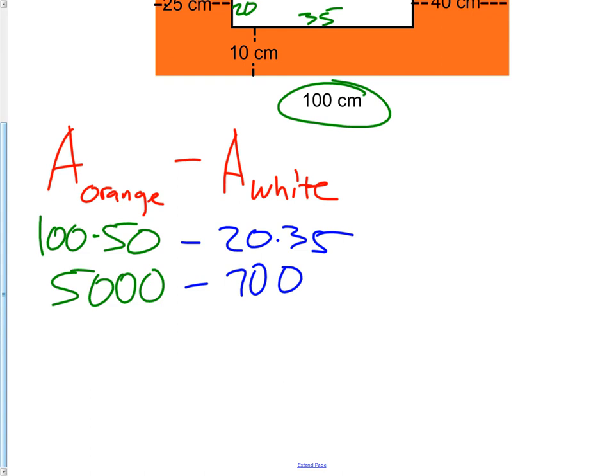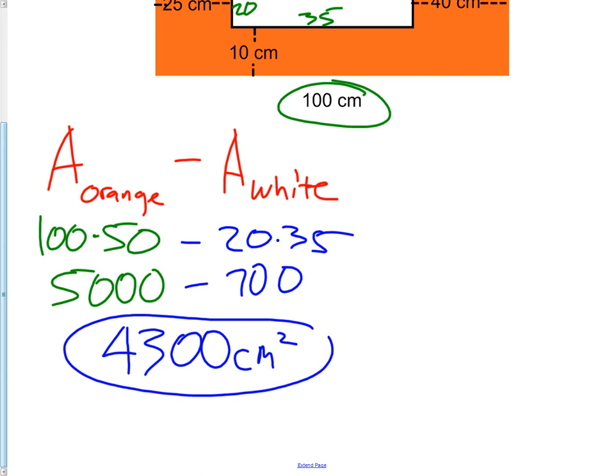Now we just need to do some subtraction, and we'll get 4,300 centimeters squared. Here was an example of where we have a hole in something, so we need to chop it out, or subtract it out.